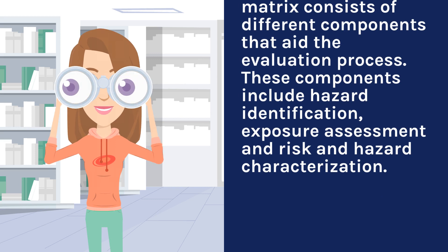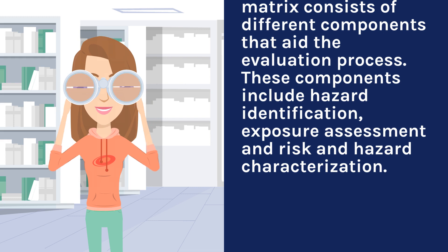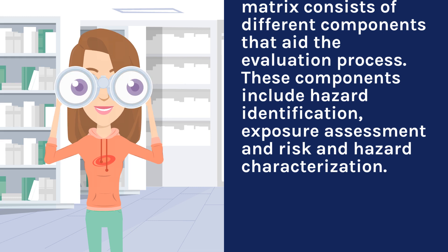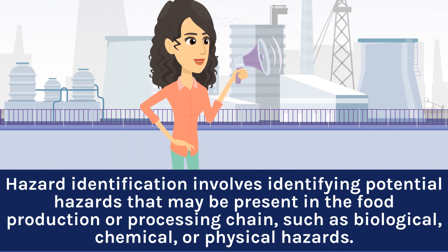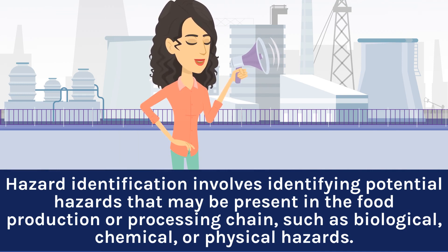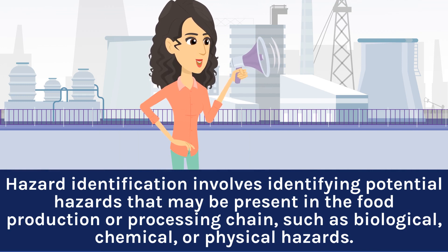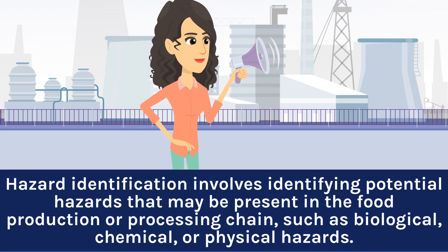These components include hazard identification, exposure assessment, and risk and hazard characterization. Hazard identification involves identifying potential hazards that may be present in the food production or processing chain, such as biological, chemical, or physical hazards.